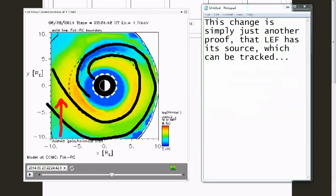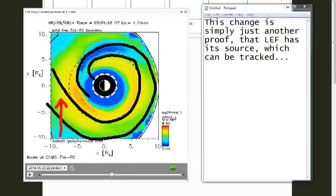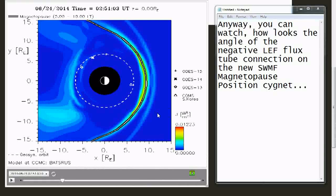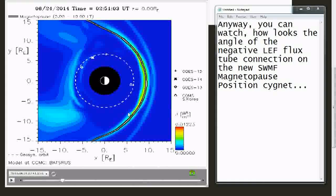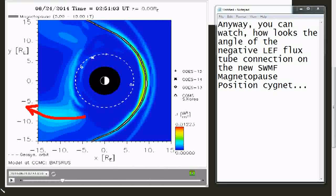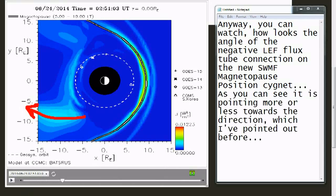This change is simply just another proof that the low energy field has its source which can be tracked. Anyway you can watch how looks the angle of the negative low energy field flux tube connection on the new SWMF magnetopause position signet. As you can see it is pointing more or less towards the direction which I've pointed out before.